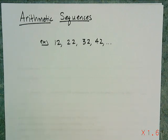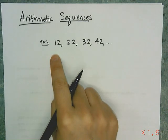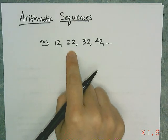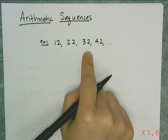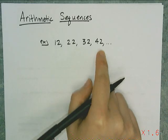This lesson is all about arithmetic sequences. To start off, this is an example of an arithmetic sequence: 12, 22, 32, 42.